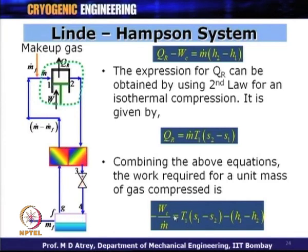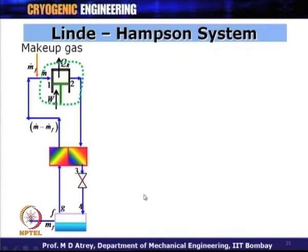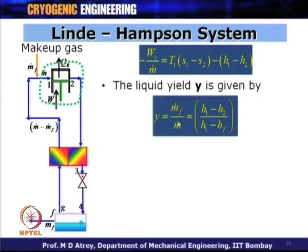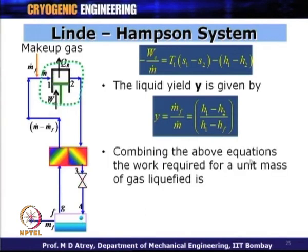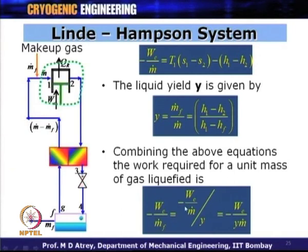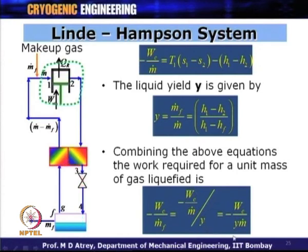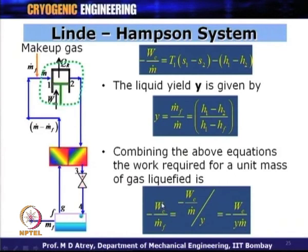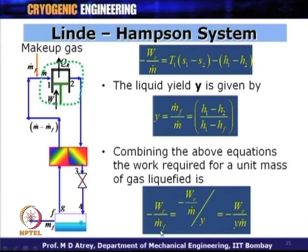The liquid yield Y is m-dot-f / m-dot = (H_1 − H_2) / (H_1 − H_F). Combining the equations, the work required per unit mass of gas liquefied is W_c / m-dot-f = (W_c / m-dot) / Y. One must be clear about what is asked: work done per unit mass of gas compressed uses the first expression, while work done per unit mass of gas liquefied requires dividing by Y.